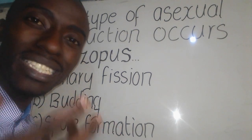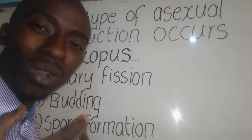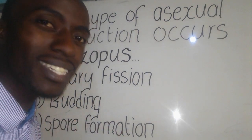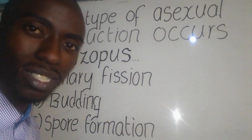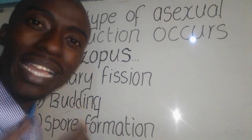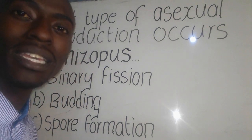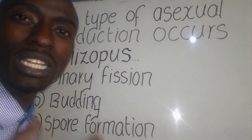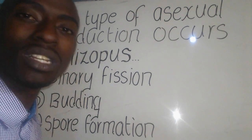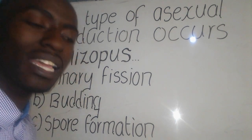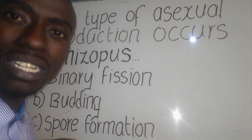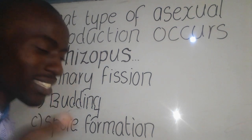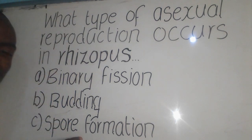Spore formation is a type of asexual reproduction where an organism produces spores. Spores are microscopically round structures which are able to germinate under favorable conditions. This is mostly seen in Rhizopus, so the correct answer is option C.